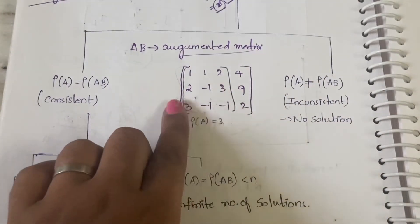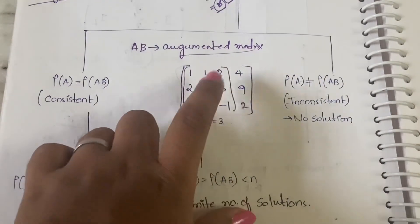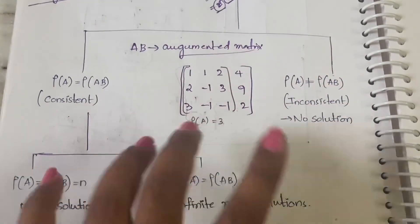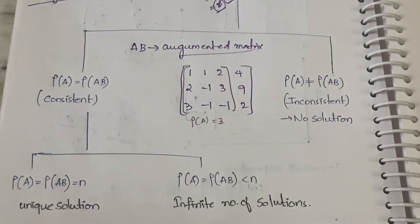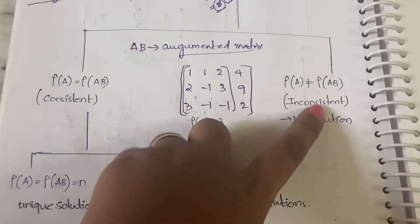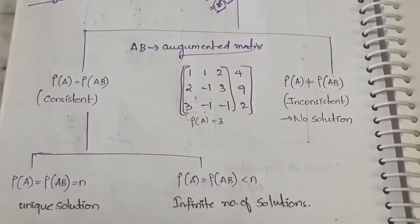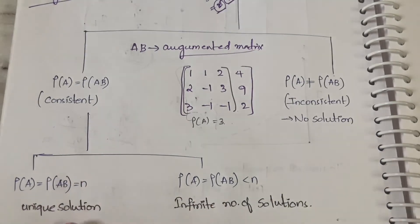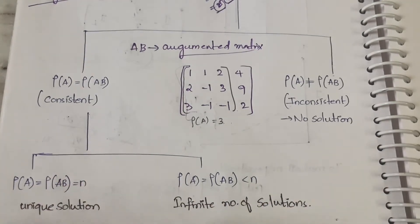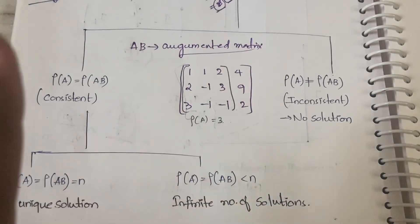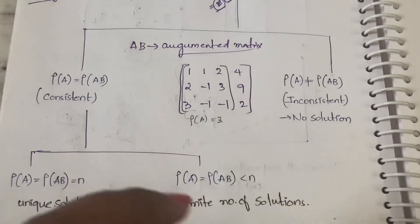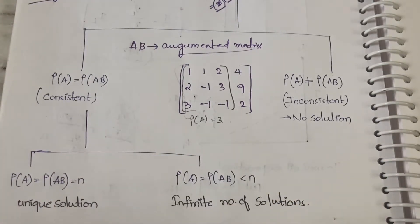If the ranks are not equal — for example rank of A is two but rank of AB is three — then it is said to be inconsistent, meaning there is no solution. You cannot find any solution for that system. If you have any confusion, don't worry — each model will be explained with an example problem for better understanding.